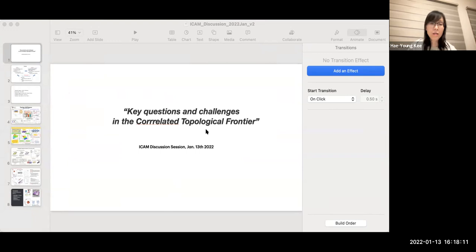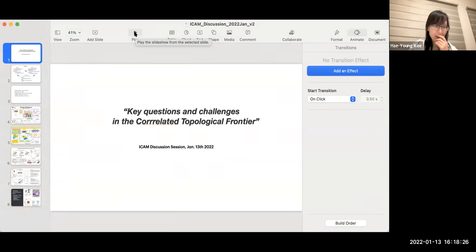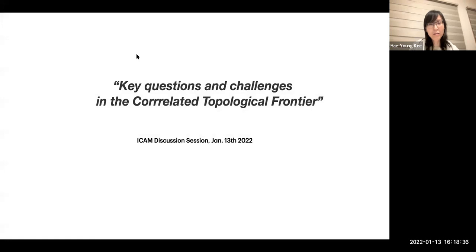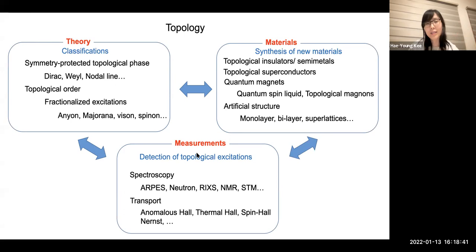After this we'll have a talk by Hong Ding. Machuda and I have been thinking about how to address this — it's such a grand, ambitious title for 45 minutes, but we'll try our best. Topology is used in many different contexts, so we put three categories: theory, materials, and measurement, and in each of those we have our own questions.